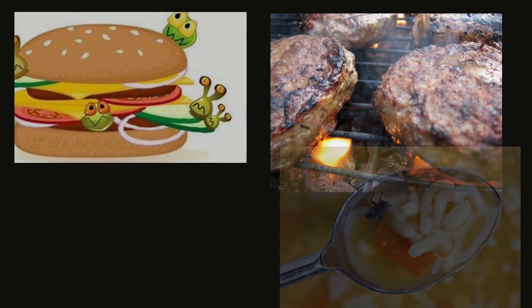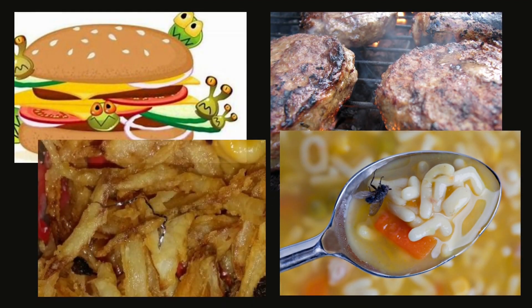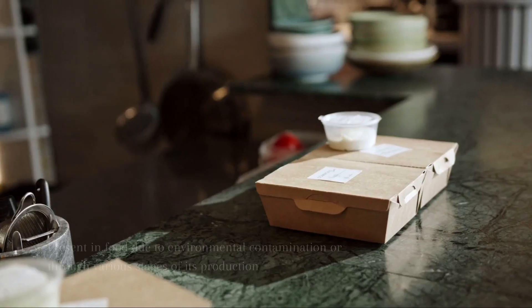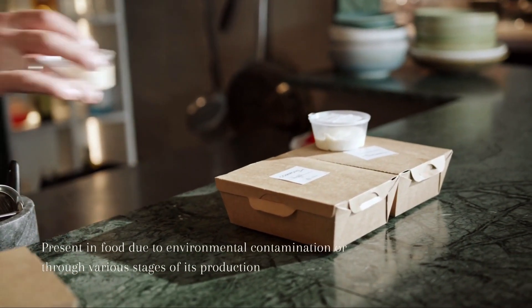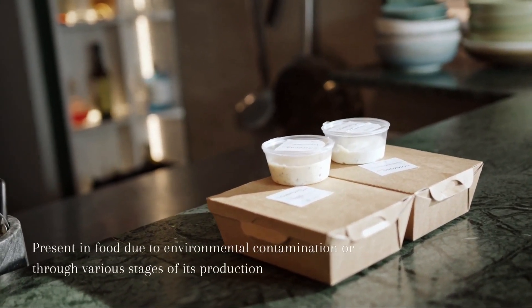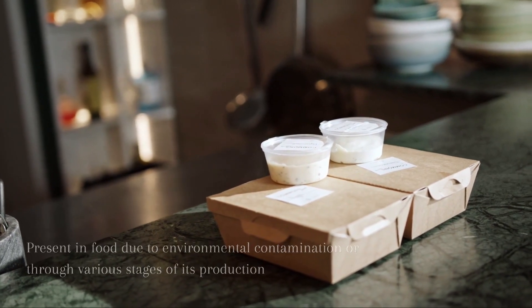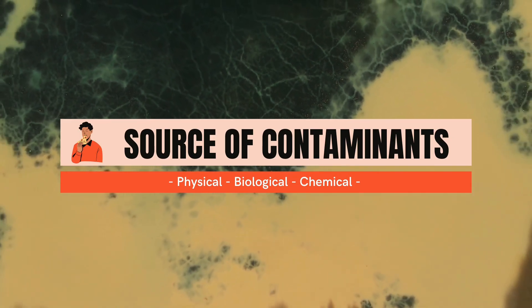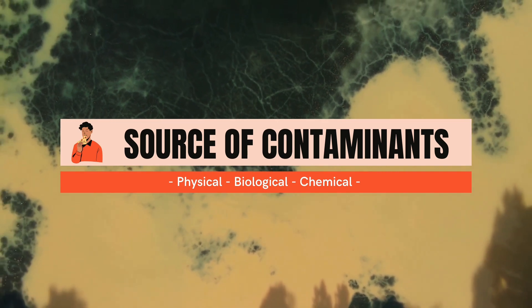Contaminants are substances or a group of substances that are toxic, persistent and liable to bioaccumulate, which give rise to an equivalent level of concern. Food contaminants are substances that are not intentionally added to food. These substances may be present in food due to environmental contamination or through various stages of its production, packaging, transport or holding. There are three main sources of contamination, which are physical, biological and chemical.